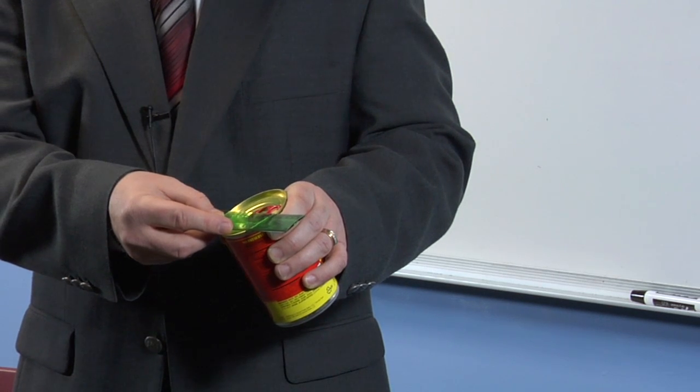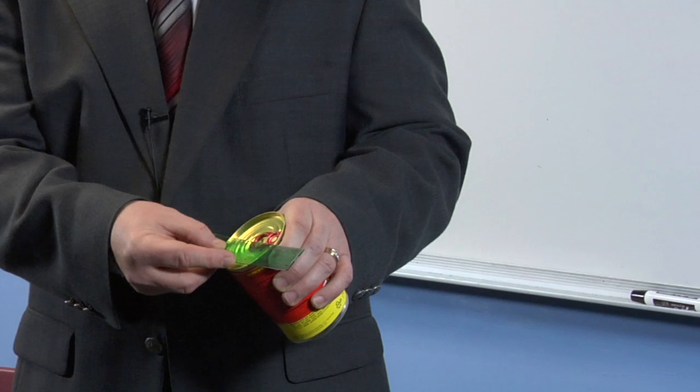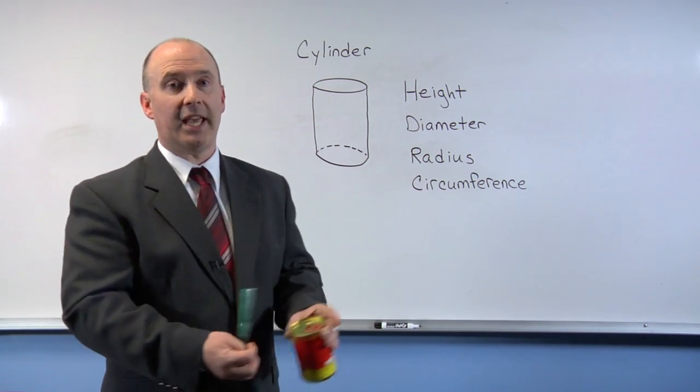Now notice that when I measured the width, I actually measured straight across the diameter of the circle, which is the shape of the top of the can.